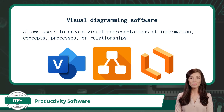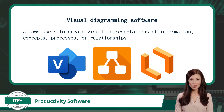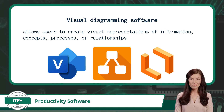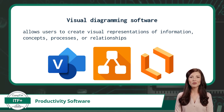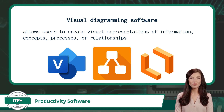The last productivity software type we will cover is Visual Diagramming Software. Visual diagramming software allows users to create visual representations of information, concepts, processes, or relationships using images, diagrams, flowcharts, text, numbers, and other graphical elements. It provides a user-friendly interface with various tools and shapes that users can use to design and connect elements to illustrate complex ideas visually. It is commonly used for planning, brainstorming, problem solving, and communicating ideas in a clear and structured manner. Three popular examples would include Microsoft Visio, Draw.io, and Lucidchart.